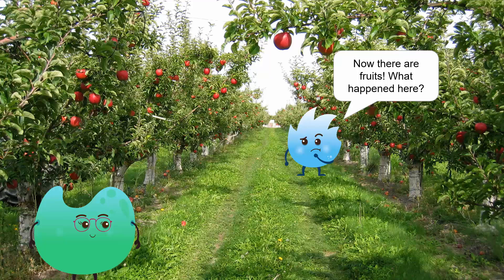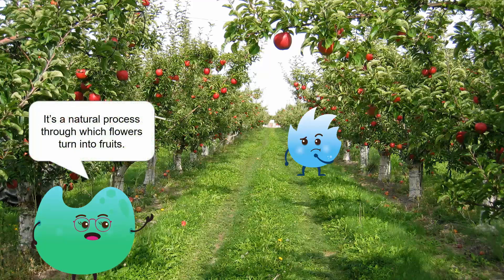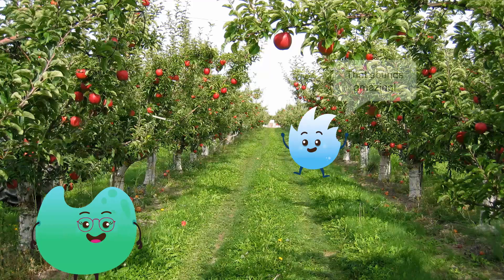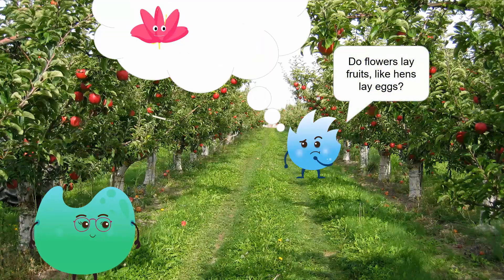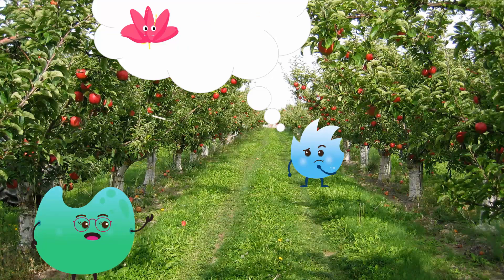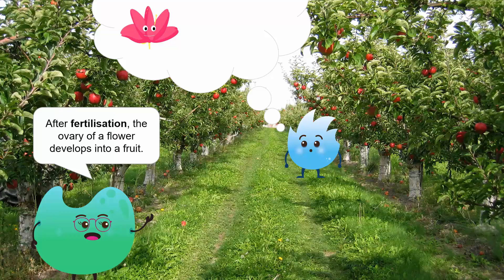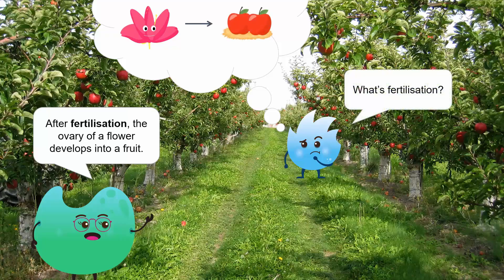Nothing's happened. It's just a natural process through which flowers turn into fruits. That sounds amazing. Do flowers lay fruits like hens lay eggs? No, Spikey. After fertilization, the ovary of a flower develops into a fruit. What's fertilization?